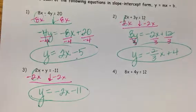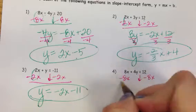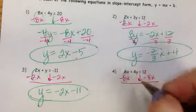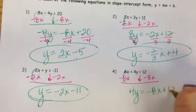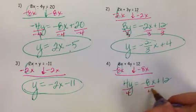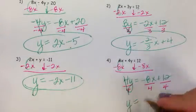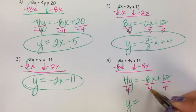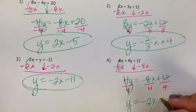In number 4, I'm going to subtract 8x from both sides. This is going to make 0. It's a positive 4y, negative 8x plus 12. I'm going to divide by 4 through every component of this equation. y equals negative 8 divided by 4, which is negative 2x. 12 divided by 4 is going to give me plus 3.